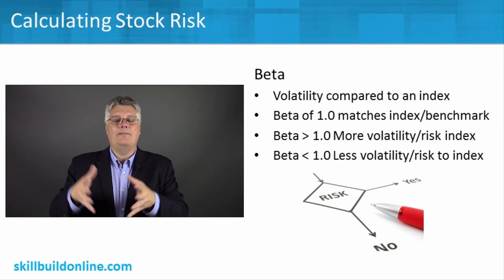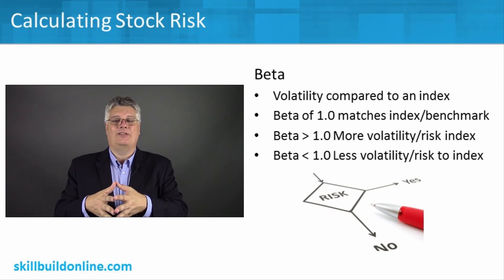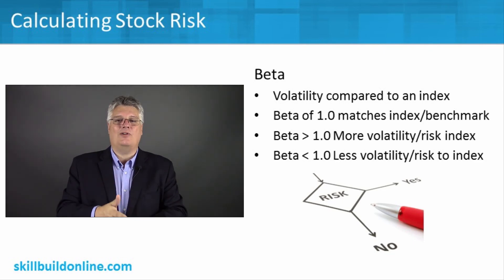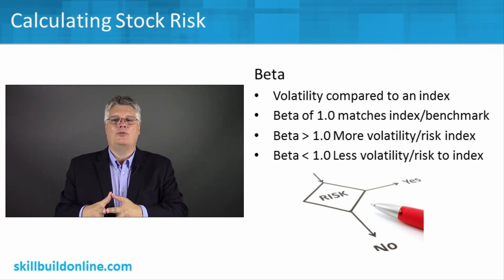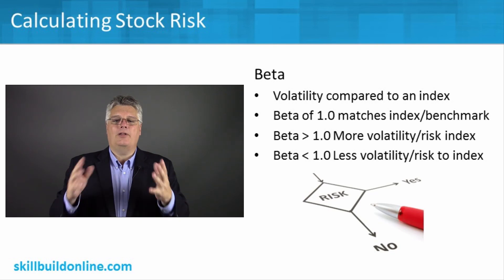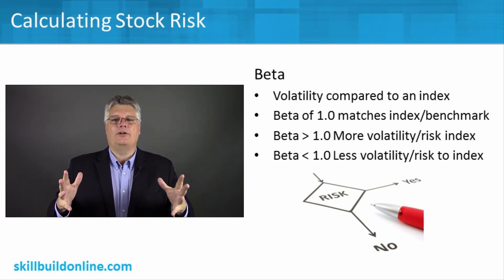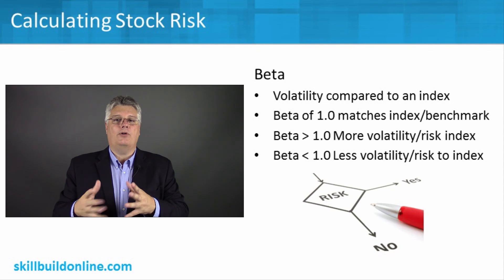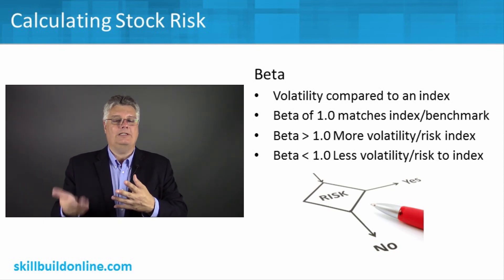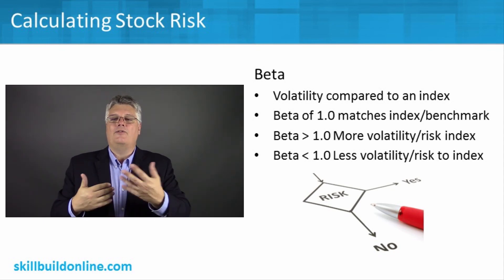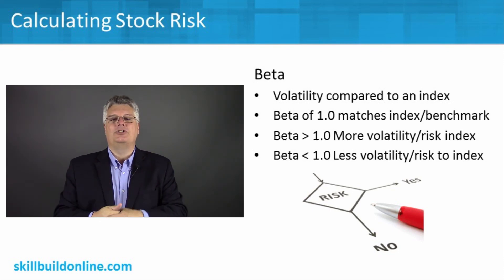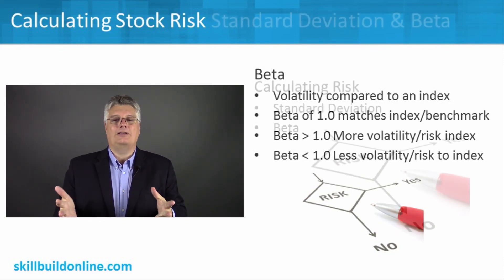If the beta is less than one, that means it has less risk compared to the index. So if the index is way up, this stock won't go up as far — but if it goes way down, it won't go down as far either. A beta of less than 1.0 means less risk, less volatility, and less change in price over a period of time.